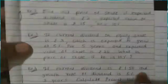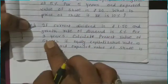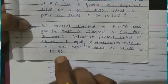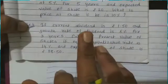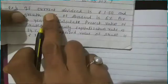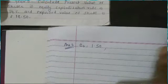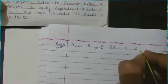Answer number 4: The current dividend is Rs. 1.50, and the growth rate of the dividend is 6% for 3 years. Calculate the present value of the share if the equity capitalization rate K is 14% and the expected value of the share P1 is Rs. 18.50. Given: D0 = 1.50, G = 6%, n = 3, K = 14%, P1 = 18.50. We use P0 = (D1 + P1) / (1 + K).